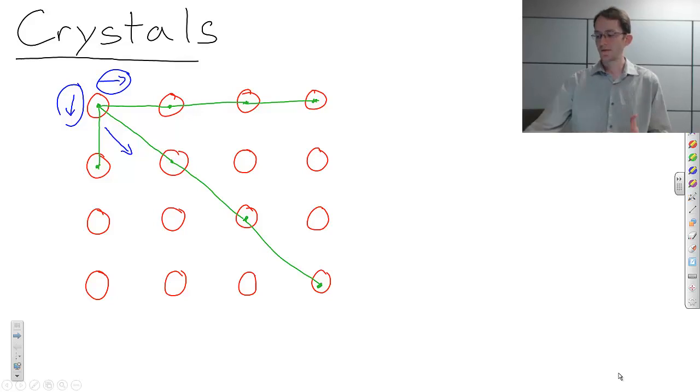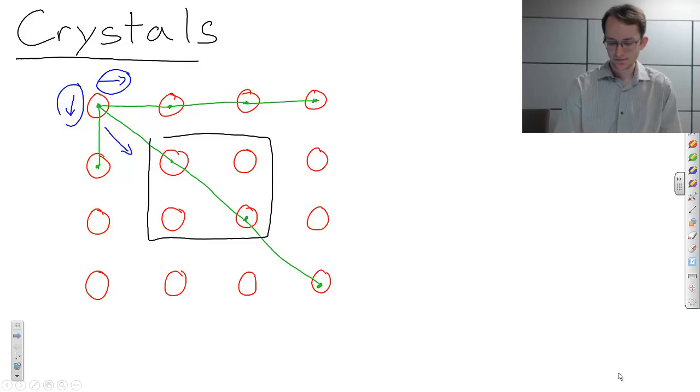So how do we define a crystal? Well, what we do is we take a subset of these atoms. And that small subset, if we repeat it in all directions, and in the third dimension coming out of the paper, if we repeat this unit in all directions three-dimensionally,